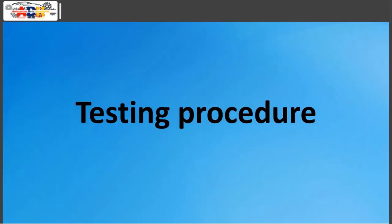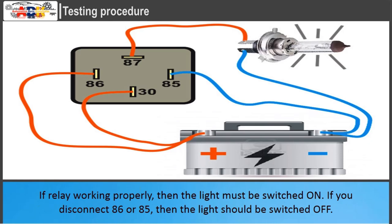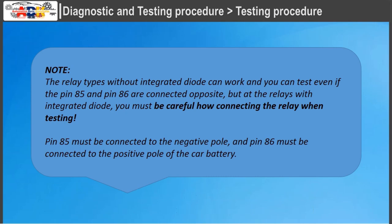Testing procedure: connect pin 85 and one pin from a light to the negative pole of the battery, as well as pin 87 to the other pin of the light. Then connect pins 30 and 86 to the positive pole of the car battery. If the relay is working properly, the light must switch on. If you disconnect pin 86 or 85, the light should switch off. Note: relay types without an integrated diode can be tested even if pins 85 and 86 are connected opposite, but for relays with an integrated diode you must be careful — pin 85 must be connected to the negative pole and pin 86 to the positive pole of the car battery.